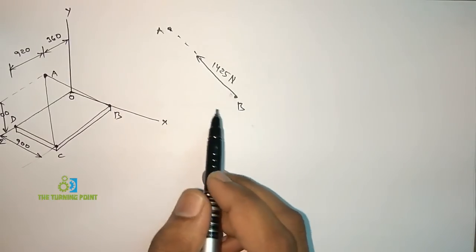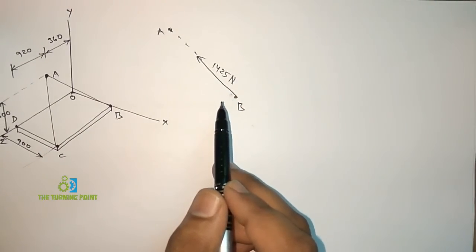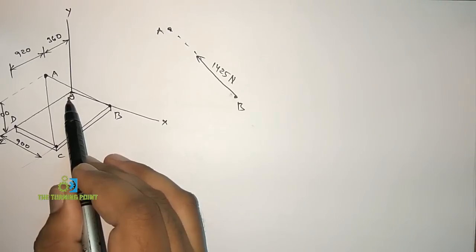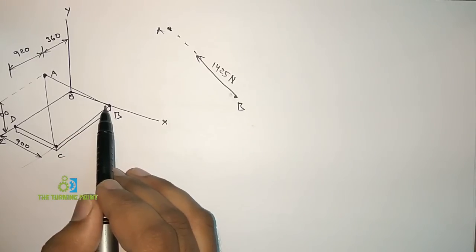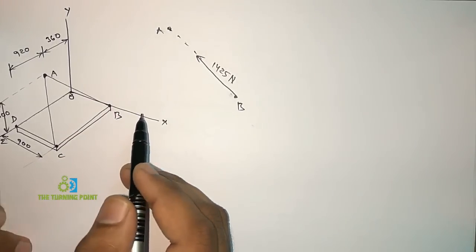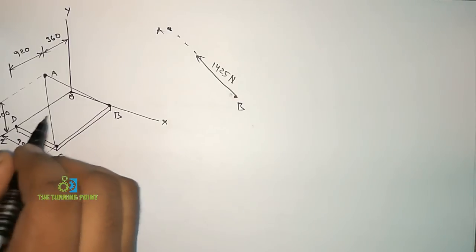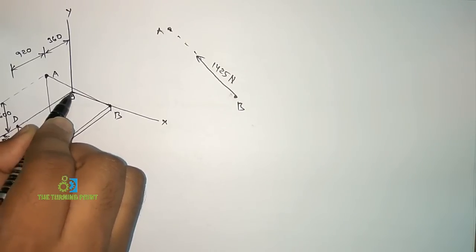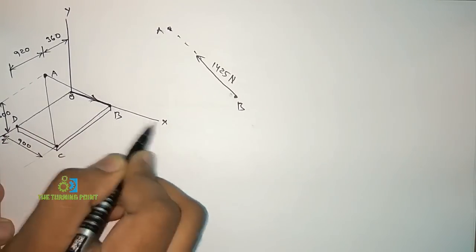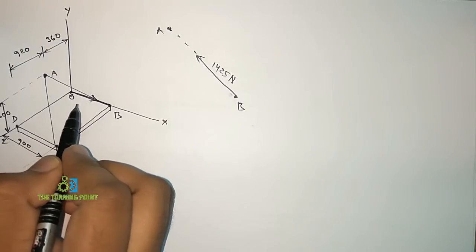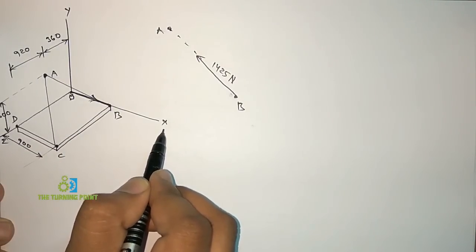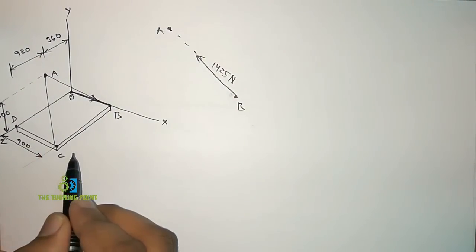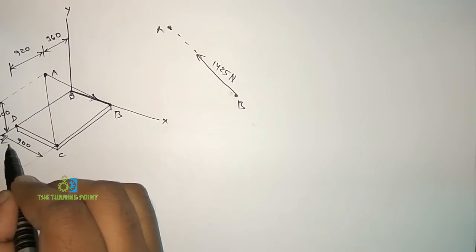First, let us calculate the coordinates of the two points. To do so, observe where the three axes intersect — that is the origin. To find the coordinates of any point, you travel from the origin along or parallel to the X, Y, and Z axes. Traveling in the given X direction is positive; the opposite is negative. Similarly for Y and Z directions.